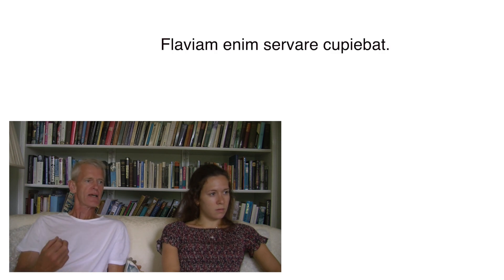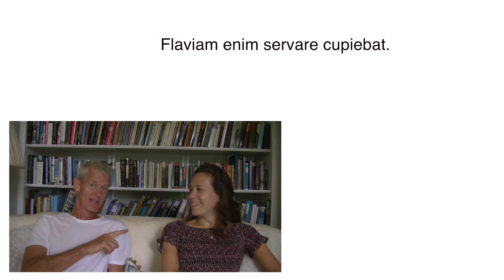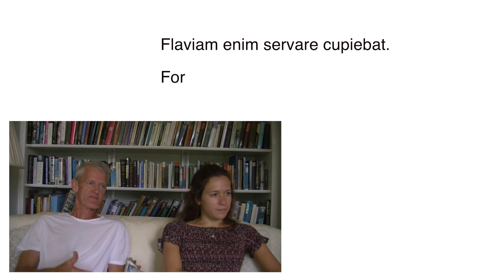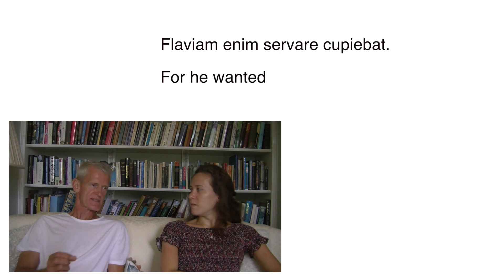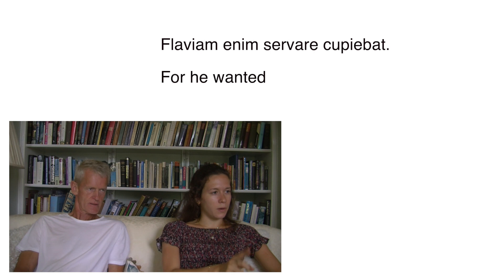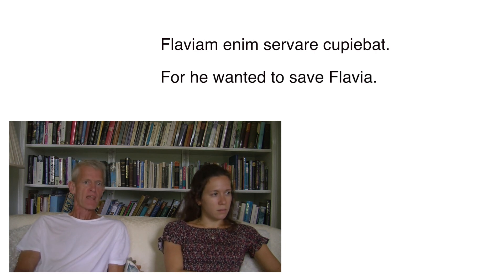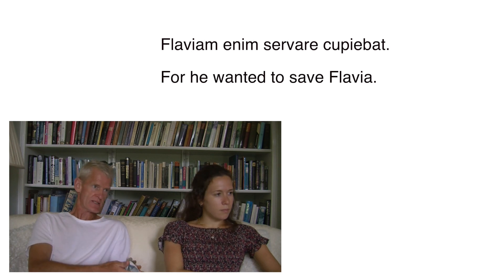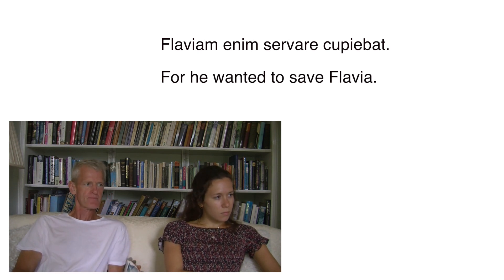'Fluviam enim servare cupiebat.' Izzy first guesses 'however,' then 'therefore,' then correctly lands on 'for' — meaning 'because.' 'Cupiebat' — he wanted. The infinitive 'servare' — to save. So: for he wanted to save Flavia. The word 'enim' explains the previous sentence — that's why he hurried. It means 'for' in the sense of 'because.'